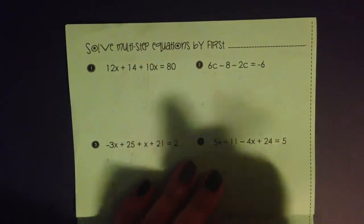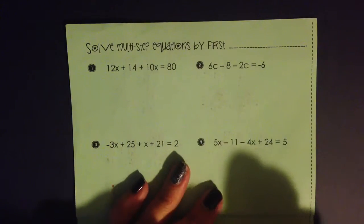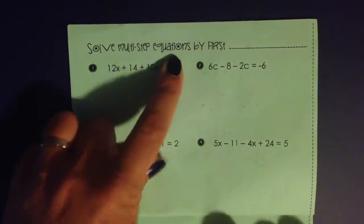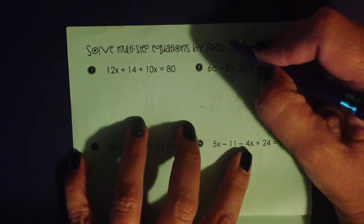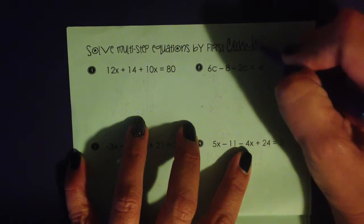On the multi-step equations, we're going to start by looking at how to solve multi-step equations by first combining like terms. What they're getting at here is that we want to combine like terms before we simplify.